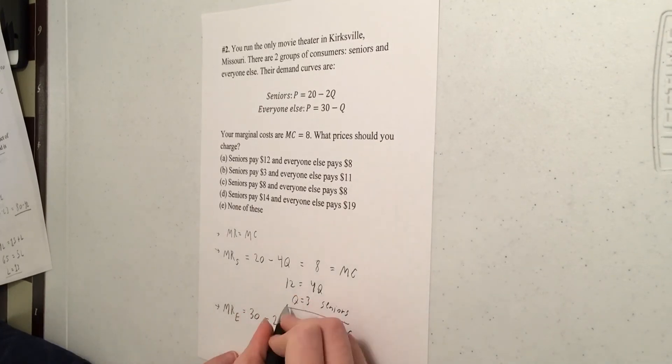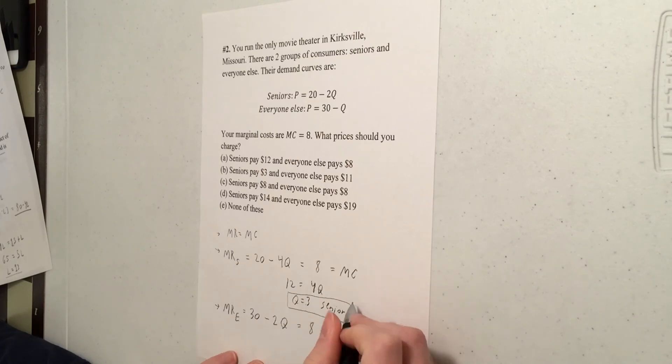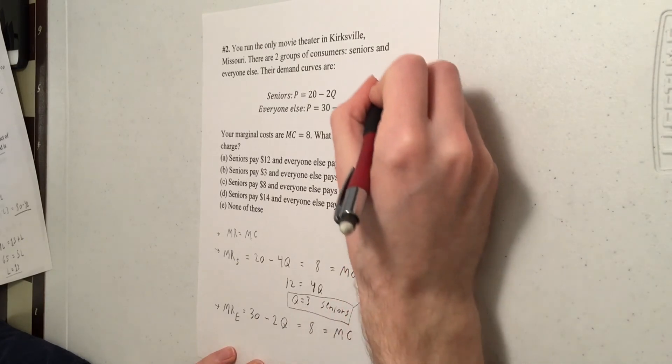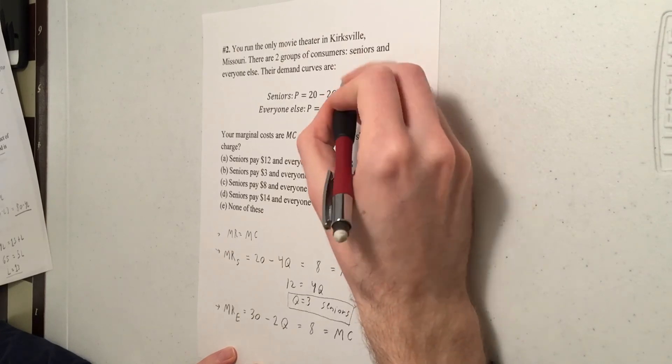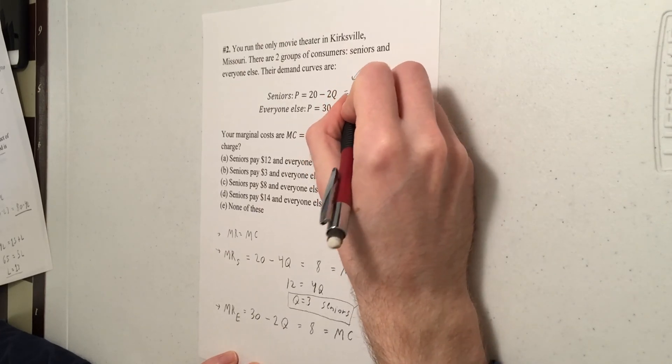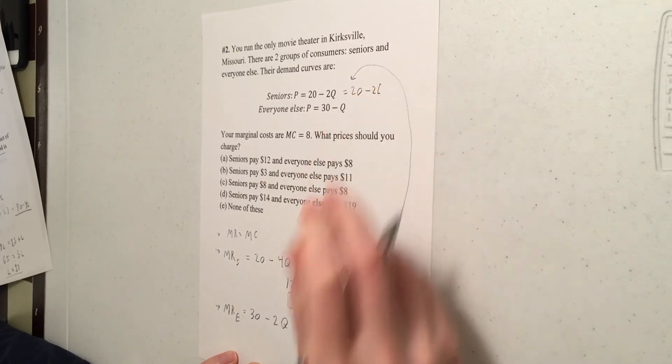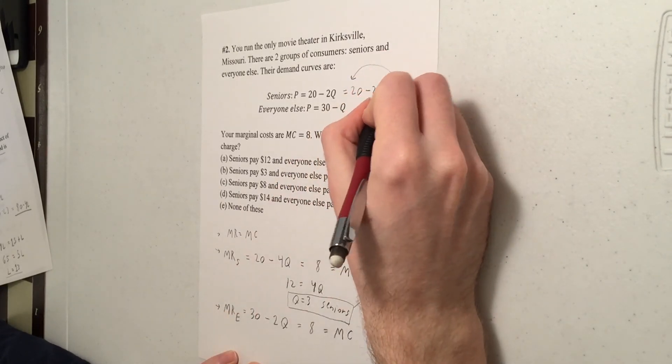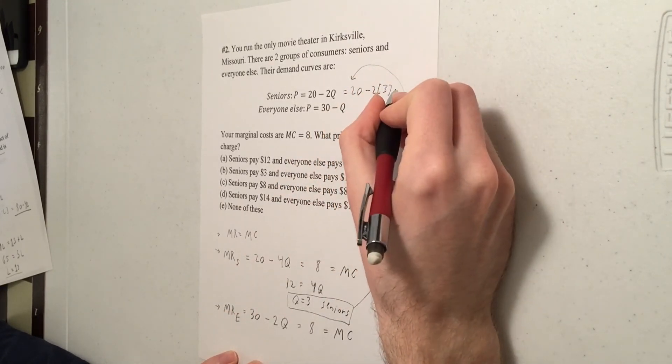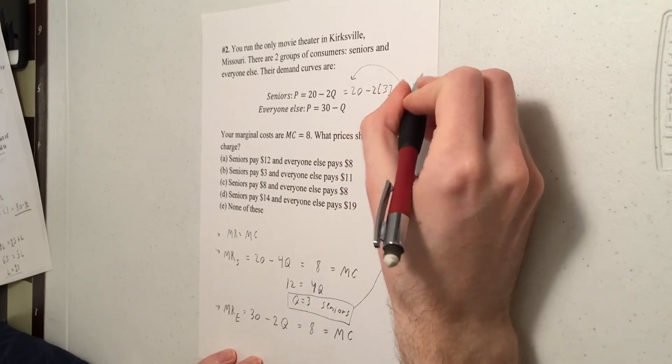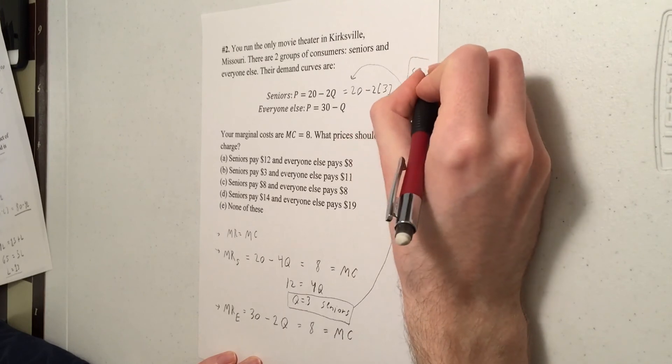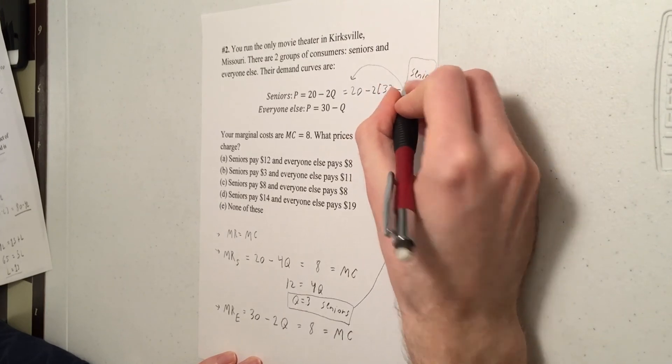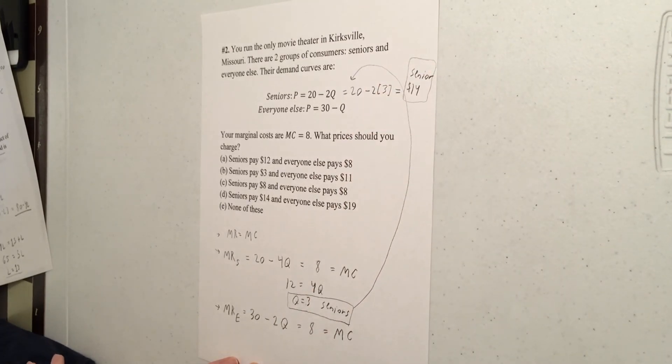And then divide both sides by four and you get Q equals three for seniors. You can then plug that back into their demand curve to find the price. So price is 20 minus 2Q, but we know Q is three for seniors. So you have 20 minus six, which comes out to 14. So you want to charge your seniors $14.